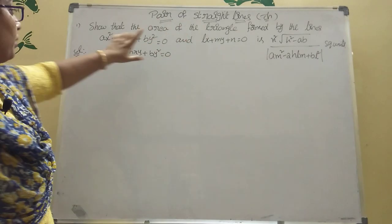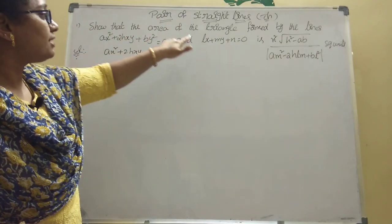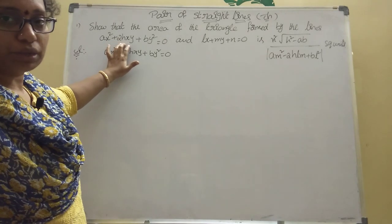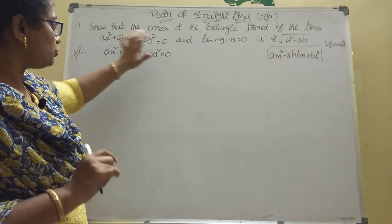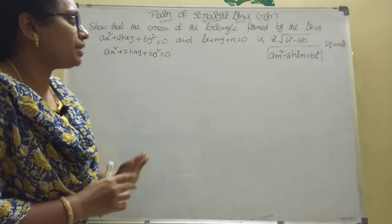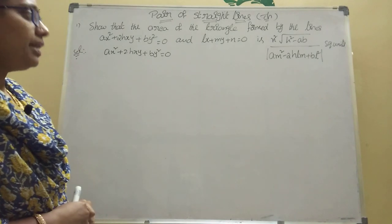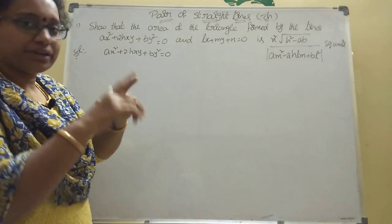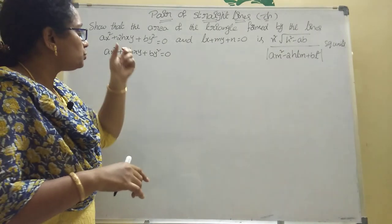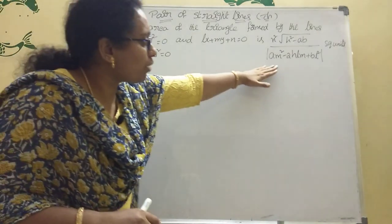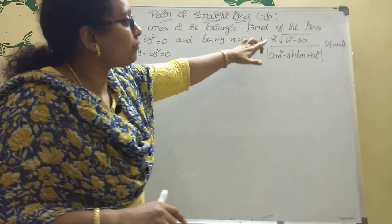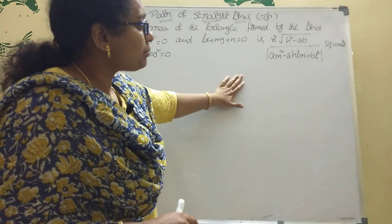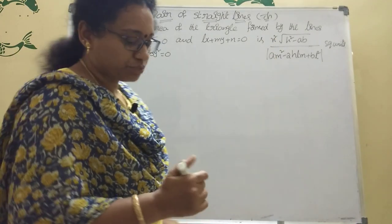Pair of straight lines theorem — what is it? Show that the area of the triangle formed by the lines: here given AX² + 2HXY + BY² = 0, and LX + MY + N = 0. Then three lines are there and you should find the area forming a triangle. You have to prove that area equals N² times root of (H² - AB), divided by (AM² - 2HLM + BL²).